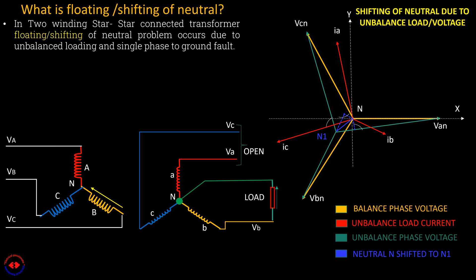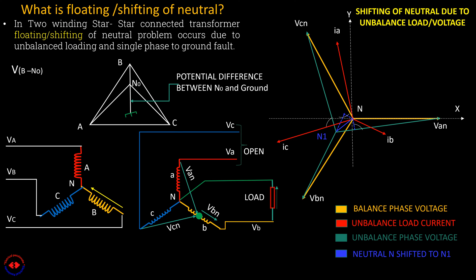This is happened due to decrease of secondary voltage VBN and increase of other two phase voltages, causes neutral shifting. The primary phase voltage VBN reduces to zero whereas primary phase voltage VAN and VCN increases nearly to full primary line voltage. This is known as neutral shifting.